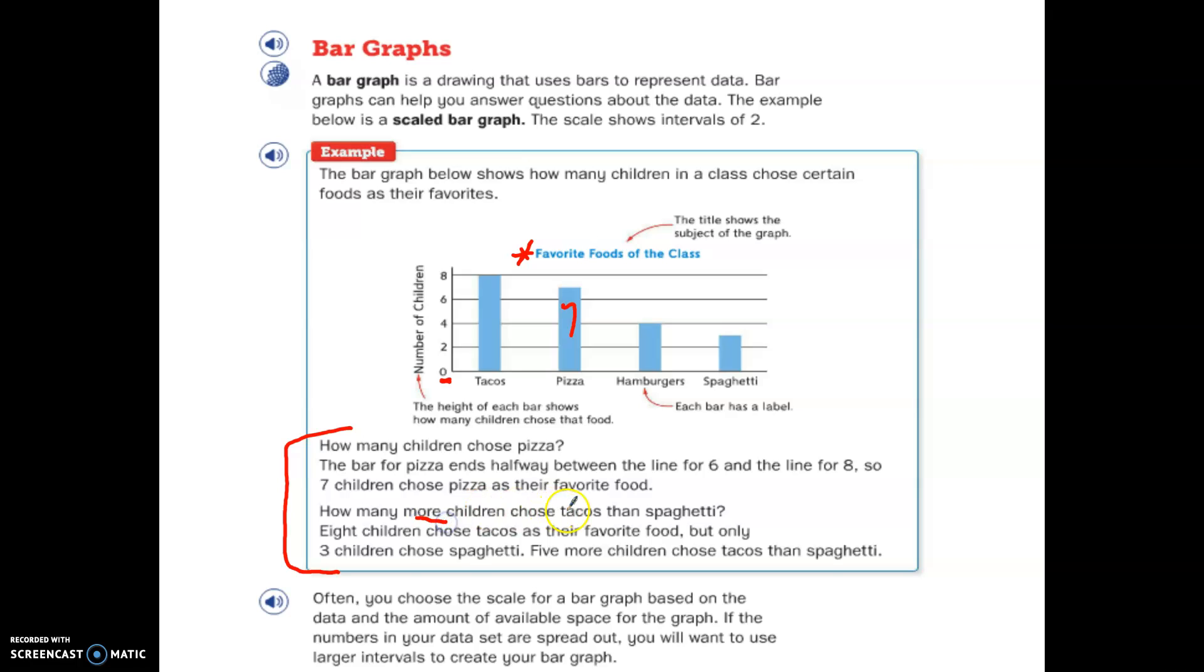How many more children chose tacos than spaghetti? So this is kind of like a two-part thing. First, I need to find out how many like tacos, then I need to find out how many like spaghetti, and then I need to decide how many more like tacos than spaghetti. So I'm going to go over here to tacos, go all the way up, and it ends at 8. So 8 children like tacos. Here's spaghetti. It goes past the 2, but not all the way to the 4. So what's in the middle? It's 3. Well, 8 and 3 are not the answer to my question. My question is how many more like tacos than spaghetti. So 8 and 3, I could make that be a subtraction problem. 8 minus 3 is 5. So 5 more children like tacos than spaghetti.